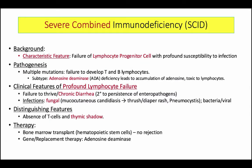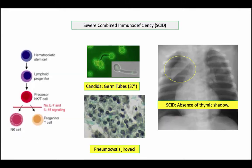The last point John highlights is the absence of the thymic shadow, which makes perfect sense since this disorder is characterized by the absence of T lymphocytes. This slide gives a pictorial representation of the material covered. Note again failure of the pre-T cell, the presence of fungal infections, and the image addressing the thymic shadow.